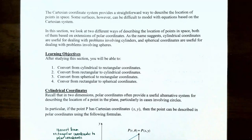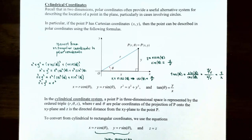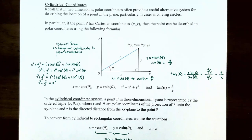In this video we're going to talk about how to convert from cylindrical to rectangular coordinates and also from rectangular to cylindrical coordinates. First, let's review polar coordinates and how to convert between rectangular and polar coordinates. Recall that in two dimensions, polar coordinates are useful as an alternative system for describing the location of a point in the plane, and they're particularly important for cases involving circles.